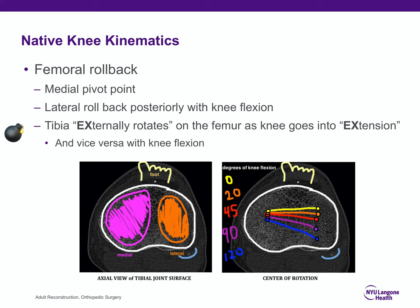The screw-home mechanism is frequently tested: as the knee goes into extension, the tibia externally rotates on the femur. Conversely, as the knee goes into flexion, the tibia internally rotates on the femur. The lateral condyle pivots off the posterior articular surface of the tibia as the knee flexes. In total knee arthroplasty, we have done a poor job mimicking this native kinematics — thought to be due to ACL sacrifice, which uncouples the ACL-PCL link driving rollback.